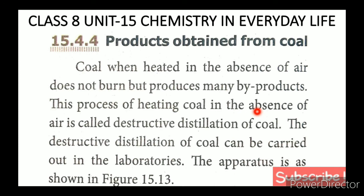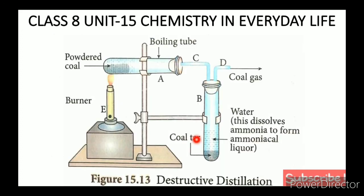There are four products from destructive distillation of coal: coke, coal tar, ammonia, and coal gas. Ammonia dissolves in water to form ammonium hydroxide. Coal gas is produced during this process. In the next video, we will discuss petroleum. Thank you, students.